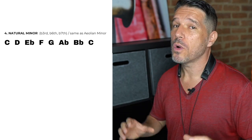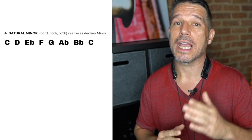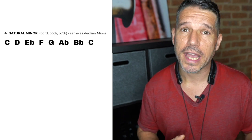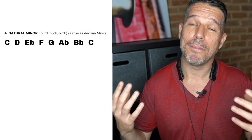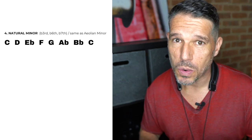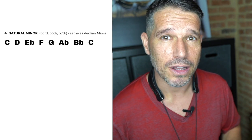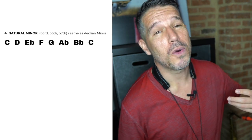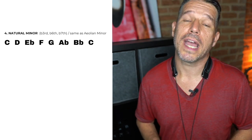Natural minor is super important because it is a tonal center — it is the main minor type of scale. When you hear someone say major or minor, they're talking about the major scale or the natural minor scale. It is the one that is a tonal center with other chords working around it, so you definitely want to learn your natural minor scales. For C natural minor, you have a lowered third — E flat, a lowered sixth — A flat, and a lowered seventh — B flat.